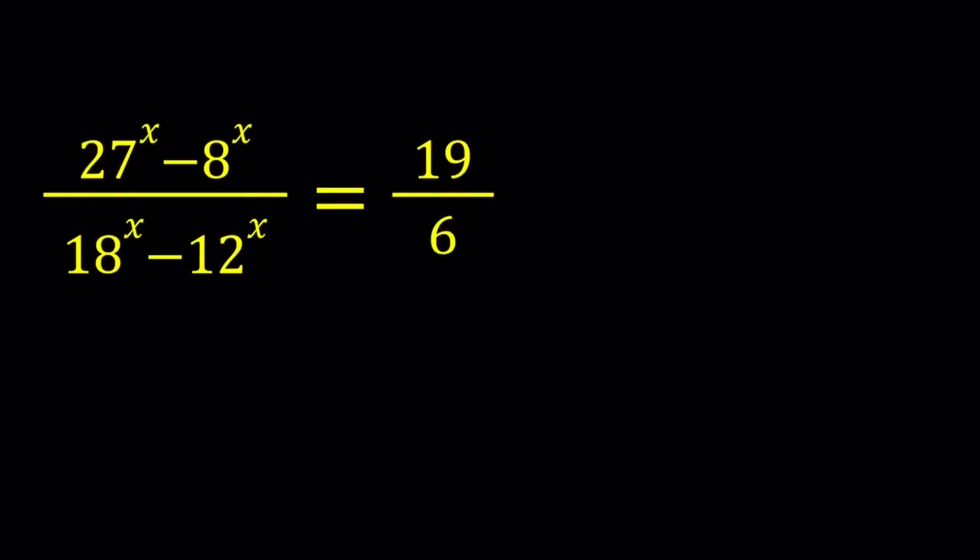Hello everyone, in this video we're going to be solving a nice exponential equation from Romania. We have 27 to the power x minus 8 to the power x divided by 18 to the power x minus 12 to the power x equals 19 over 6, and we're going to be looking for x values.